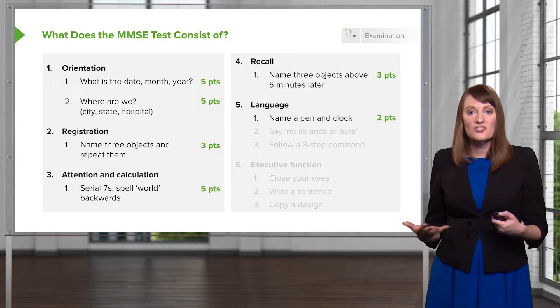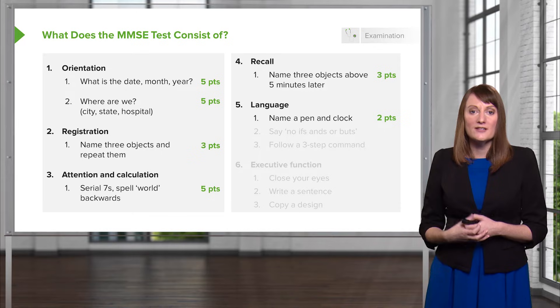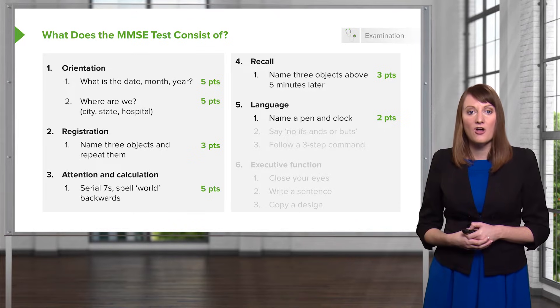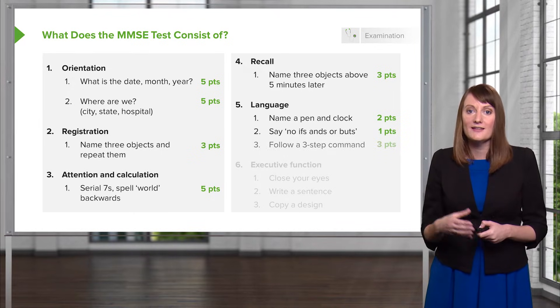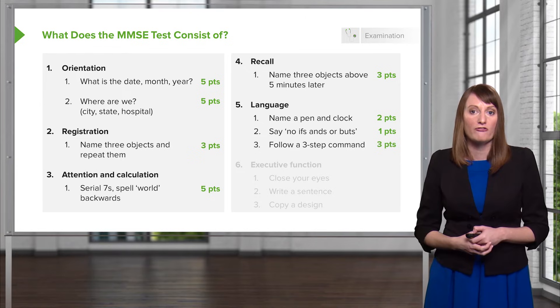You're going to score patients by asking them to name simple objects like a pen and a clock, ask them to repeat a sentence after you, and give them a three-step command to follow.